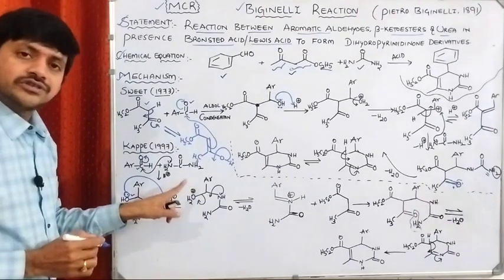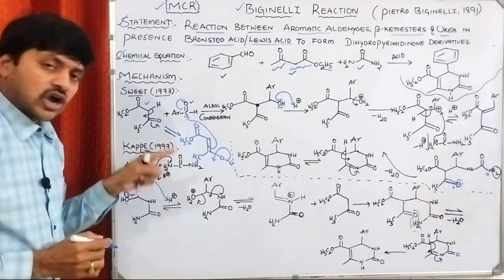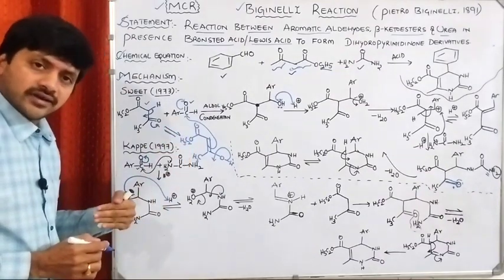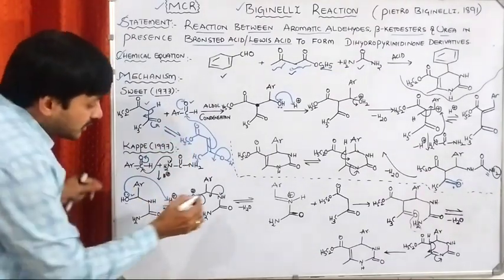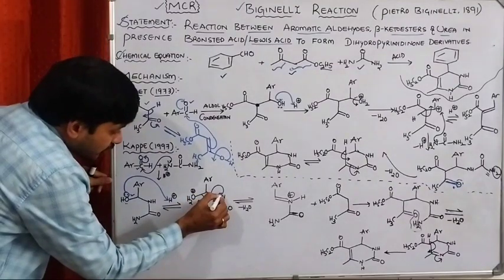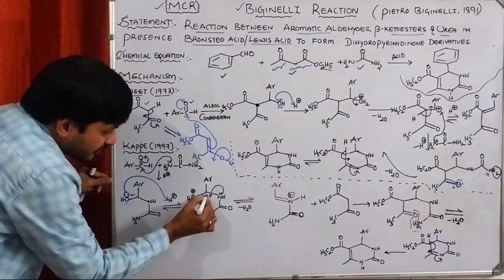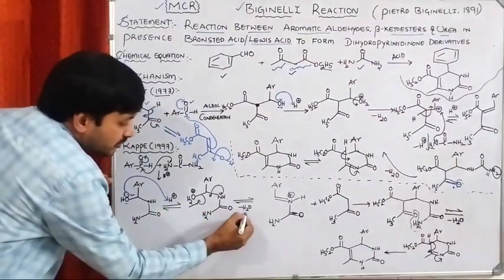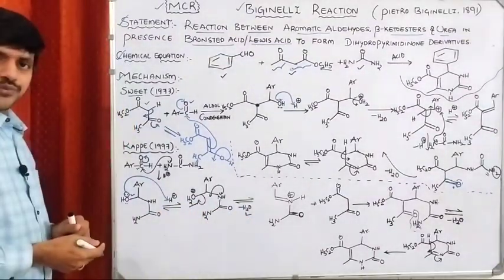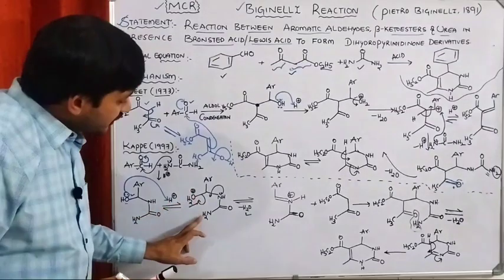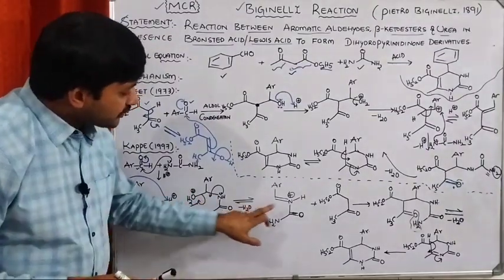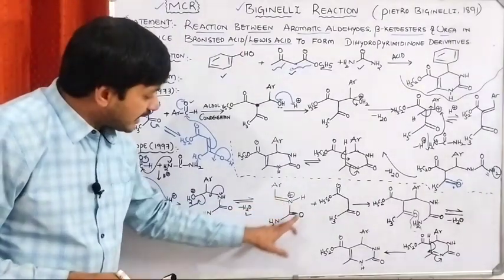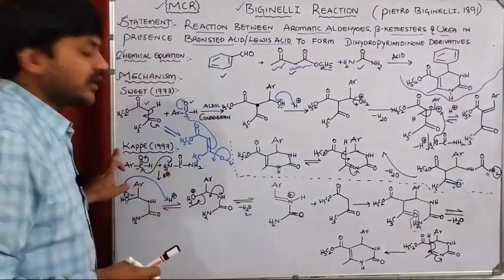Oxygen getting positive charge means it is electron deficient. In order to fulfill its electron deficiency, the nitrogen lone pair electrons involve in pi-bond formation. Thereby the H2O is removed in the form of H2O. What we observe here is the formation of a positive charge on the nitrogen — an N-acyliminium ion. This is the intermediate according to Kappe.